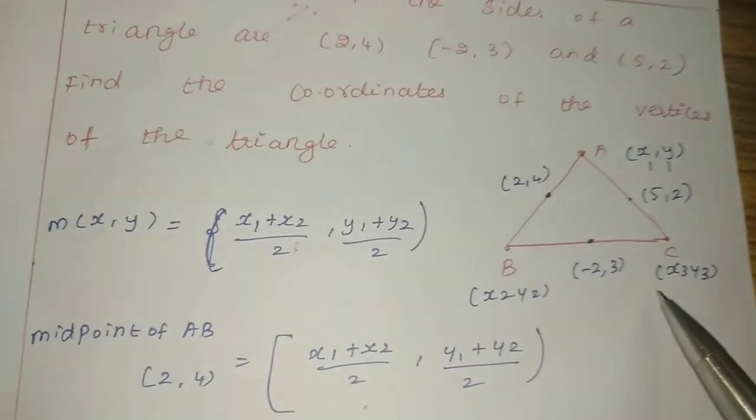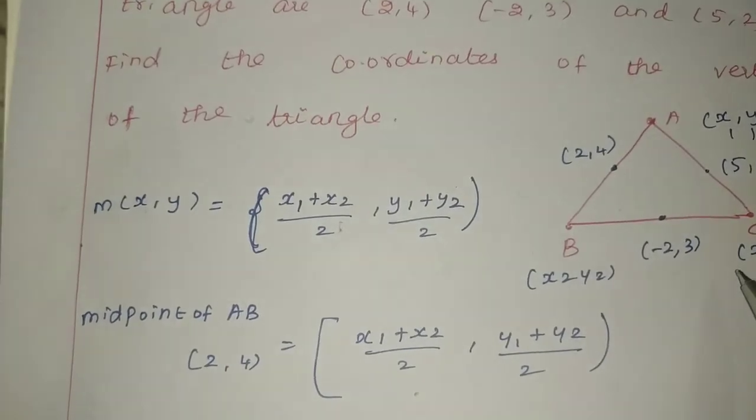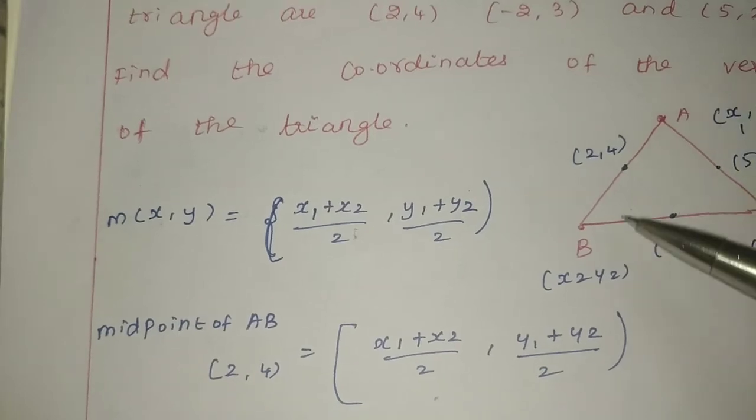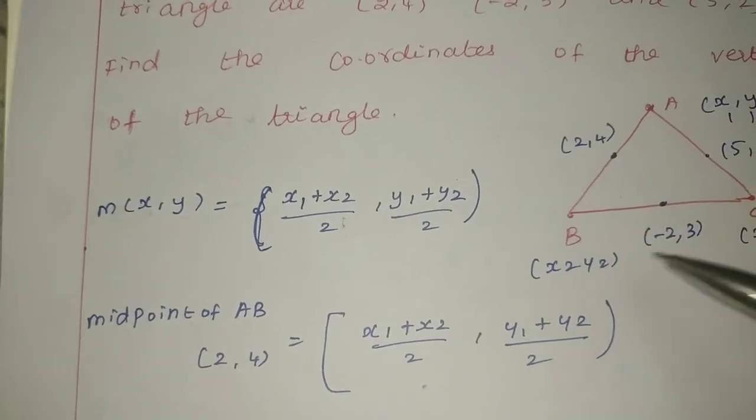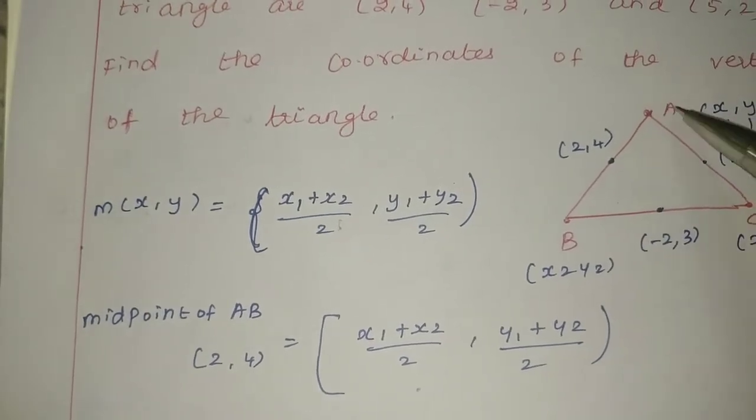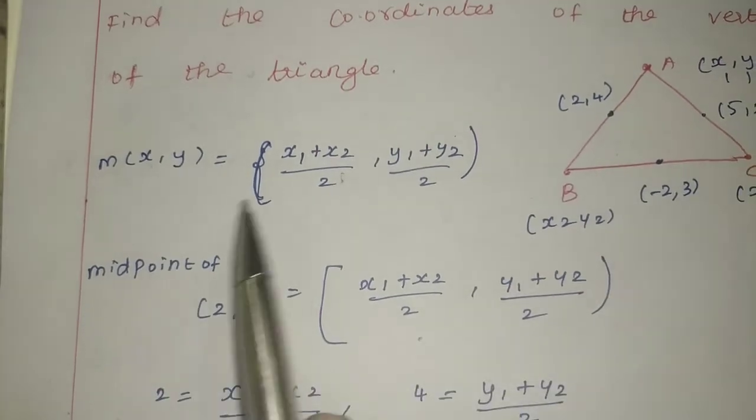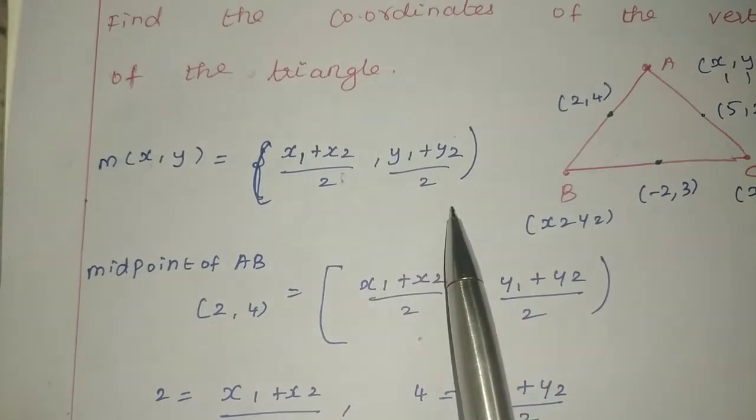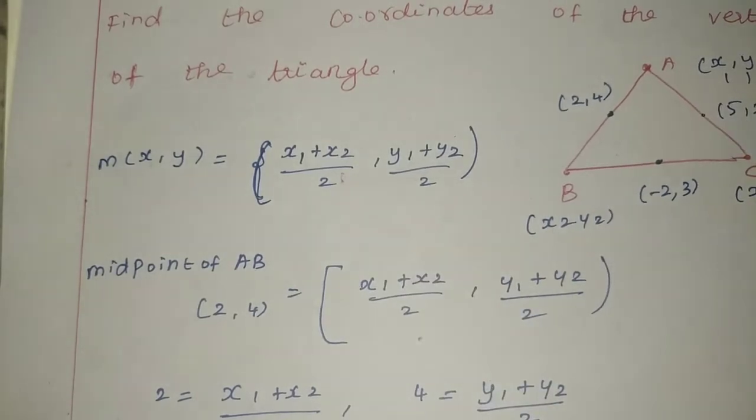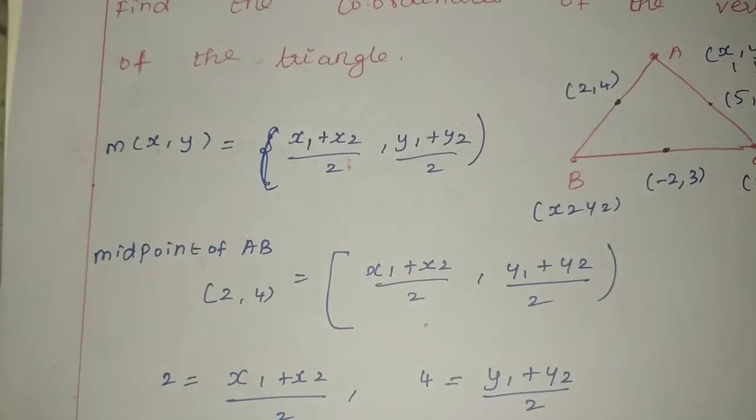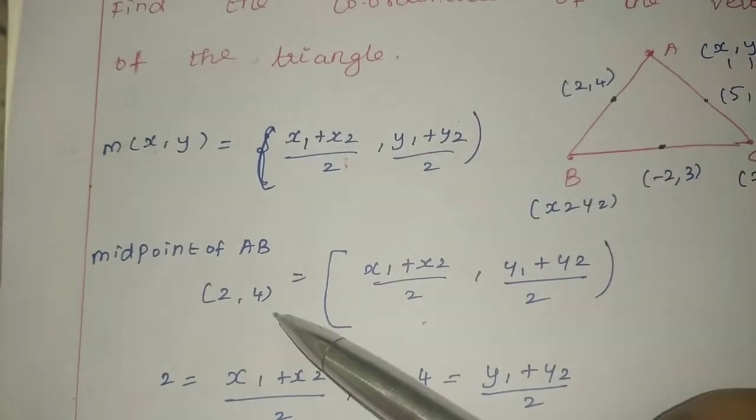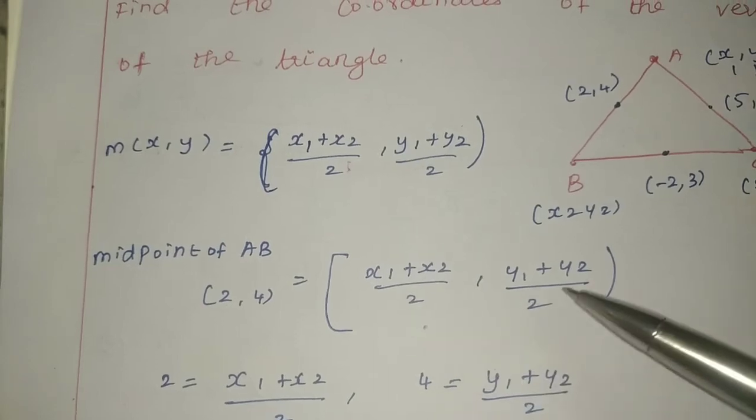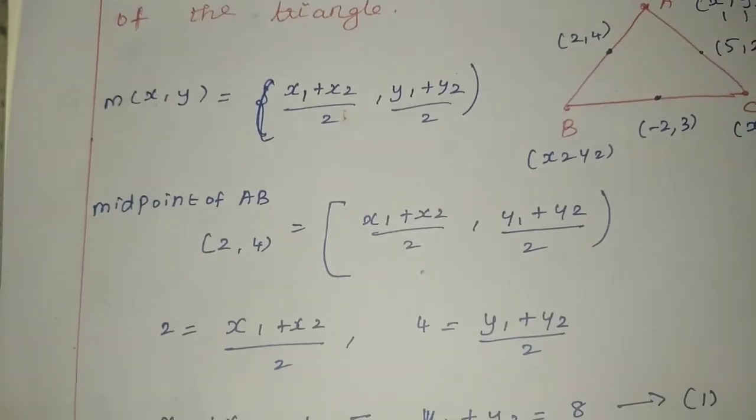We will find the midpoint of AB, midpoint of BC, and midpoint of AC. The midpoint formula is (x1 + x2)/2, (y1 + y2)/2. For midpoint of AB equals (2,4), we apply the formula.